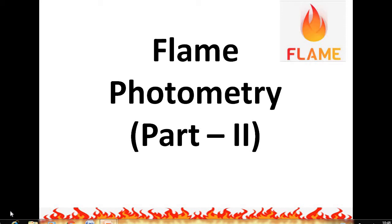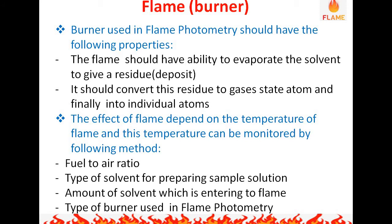The burner used in flame photometry should have the following properties: the flame should have the ability to evaporate the solvent to give a residue, and it should convert this residue to gaseous state atoms and finally into individual atoms. The flame temperature can be monitored by the fuel-to-air ratio, the type of solvent used for preparing the sample solution, the amount of solvent entering the flame, and the type of burner used.